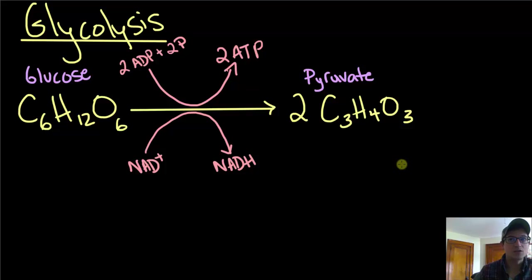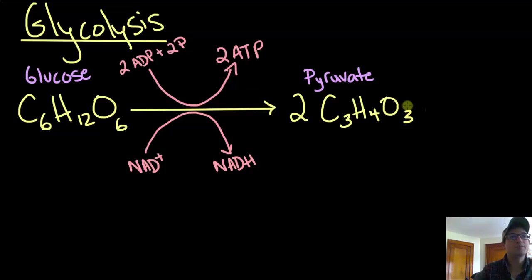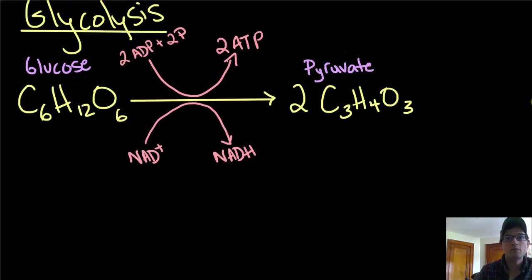So let's follow the anaerobic path first — the one that occurs without oxygen — and then we'll look at the aerobic path, the one that proceeds with oxygen. This pyruvate is going to be altered and broken down without a gain of energy.